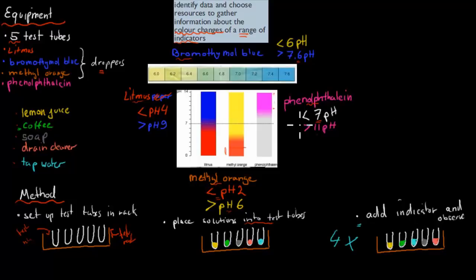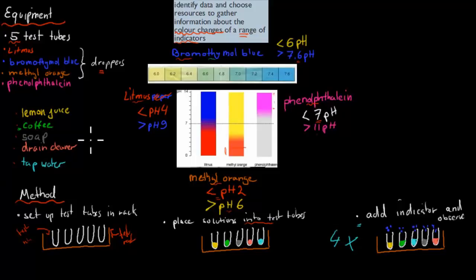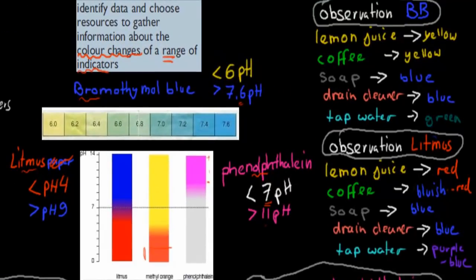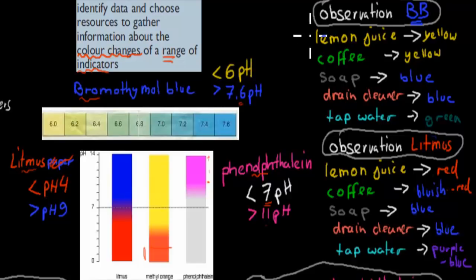Let's say we start with bromothymol blue as our first indicator. What you do is put a couple of drops of bromothymol blue into each of the test tubes and observe the color change. Using those observations, we can estimate what kind of pH it has. For lemon juice, it turned yellow with bromothymol blue. Yellow means a pH of less than 6, so we know that lemon juice has a pH of less than 6.